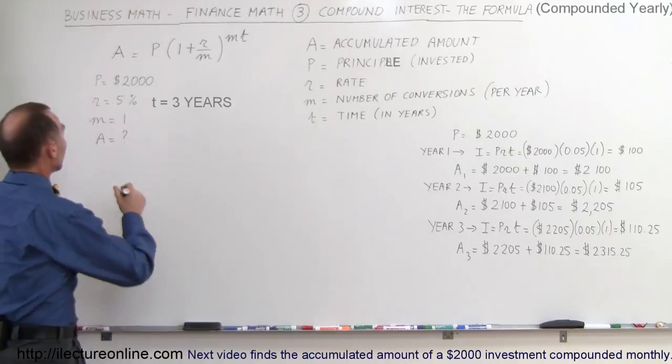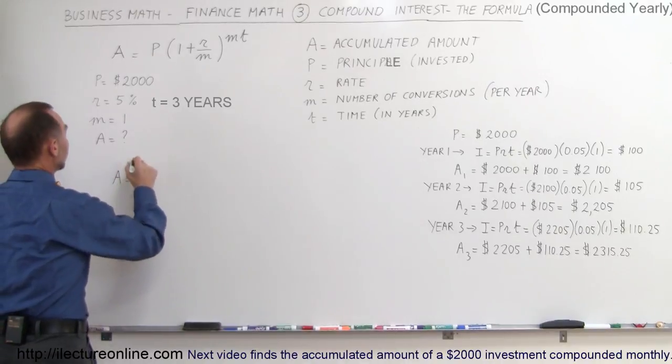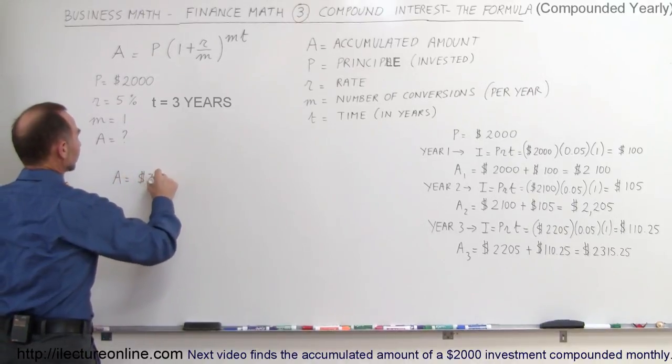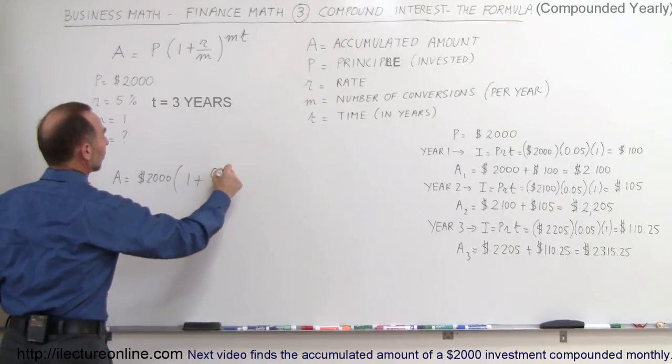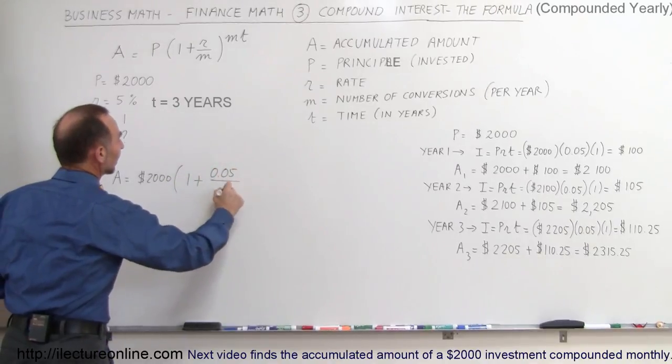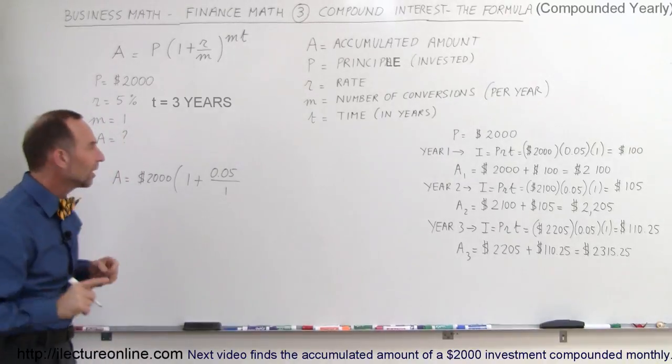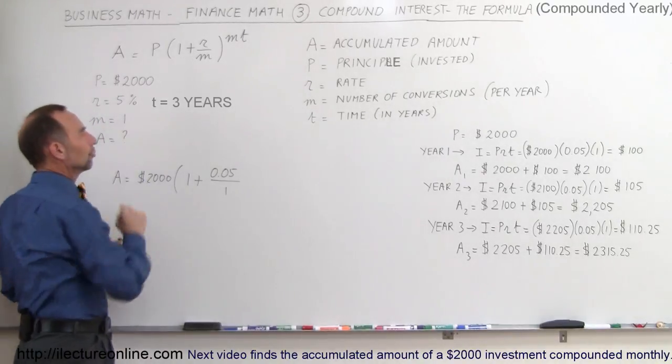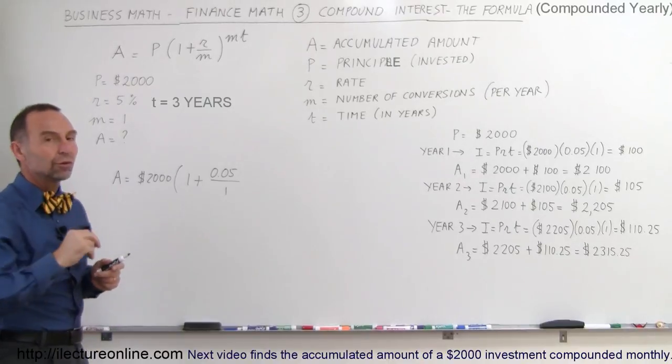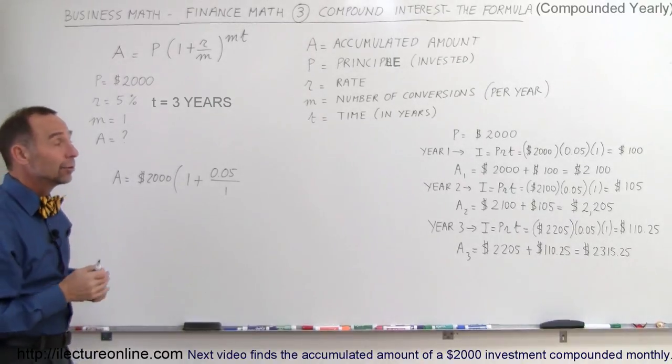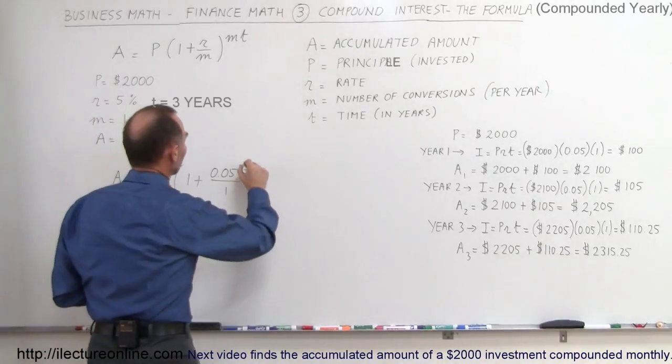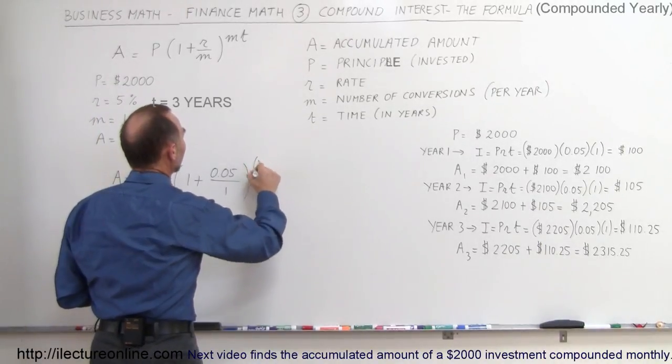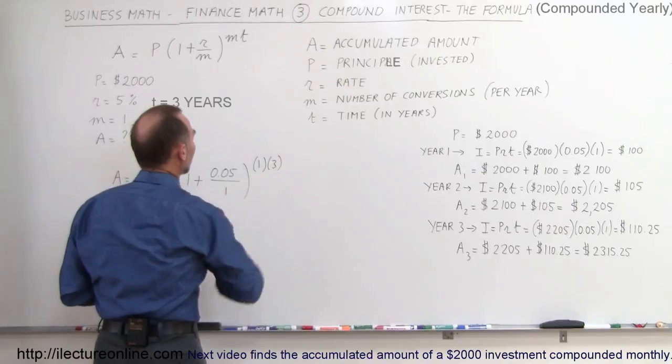let's see how the equation would work. The amount would be equal to the $2,000 invested times the quantity (1 plus the rate, which is 0.05, divided by the number of conversions per year). In this case, we're going to do one conversion per year. Typically, banks now do compounded daily, and we'll show an example of that later. So this is then raised to the M, which is 1, times T, which is 3.